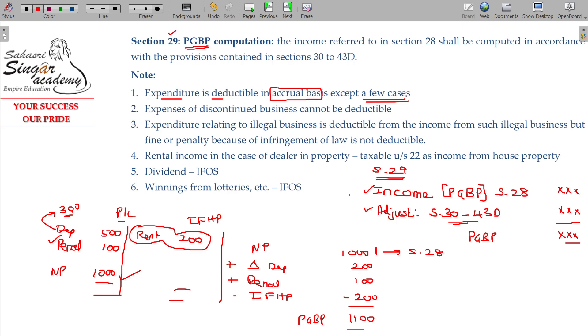In the income from PGBP, you have to debit it. And business is discounted if you have to debit it, it cannot be deductible.